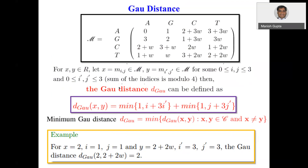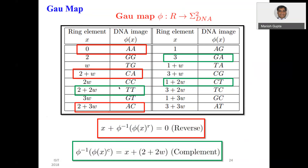Keeping this in mind, we define the Gao distance as: d_Gao = min(1, i + 3i') + min(1, j + cj'), where we take the minimum. We also define the minimum Gao distance on the ring. We then define a map — the Gao map — from the ring Z4 + omega*Z4 to DNA strings, where, for example, 0 maps to AA, 2 maps to GG, omega maps to TG, and so on.